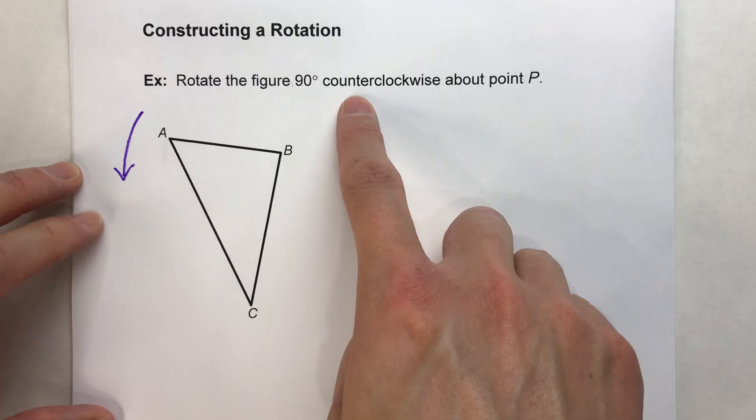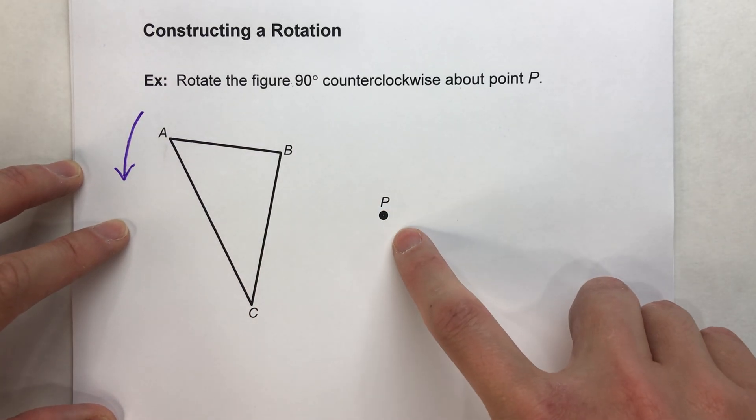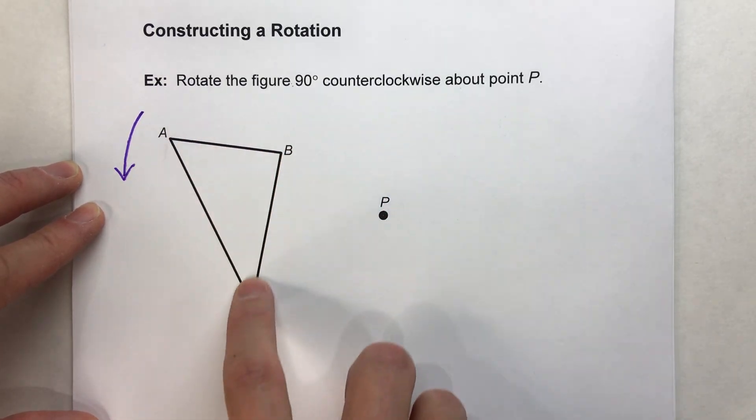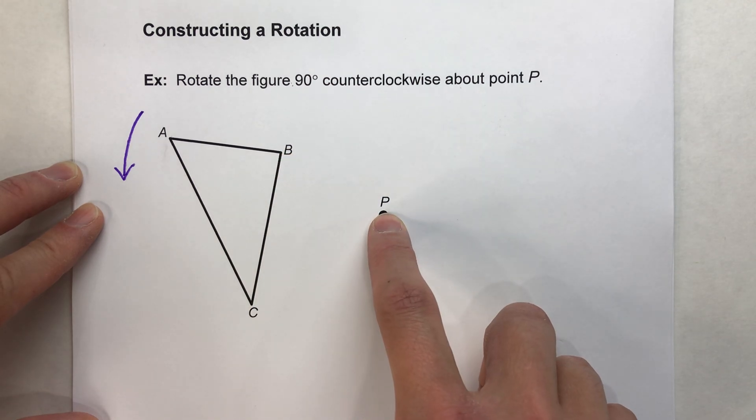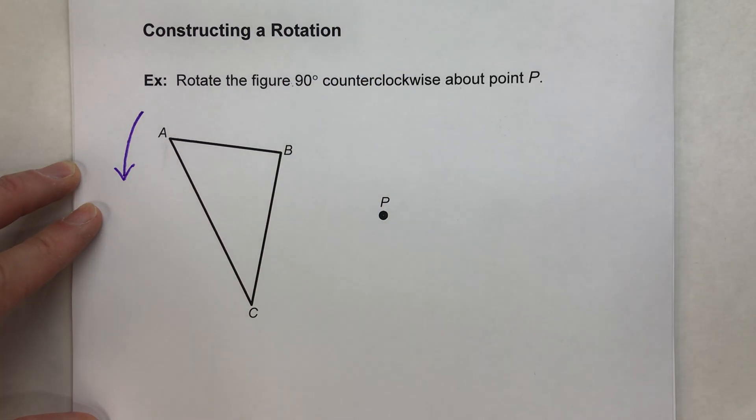But we're rotating at 90 degrees counterclockwise about point P. So that means all the points of this triangle are going to rotate around point P in this direction.